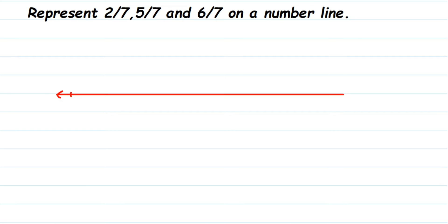Since we don't have any negative fractions here, we can start with zero and mark one on the other end. Now look for the denominator — you have a seven for each fraction, so you make seven equal parts.